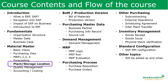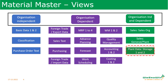After discussing the basic views, purchasing view, MRP 1, 2, 3, 4 and forecasting views, we are going to discuss plant store location views. Plant store location views have parameters which are client-based, plant-based and store location-based. All organization-based details are there, which is why it is in the section of organization dependent and also organization independent columns.